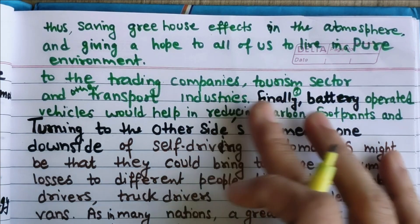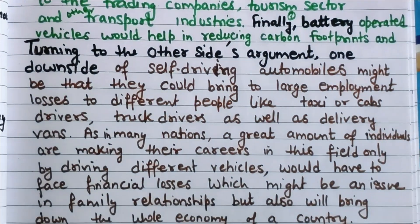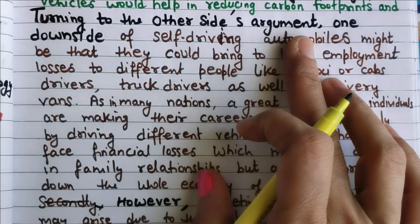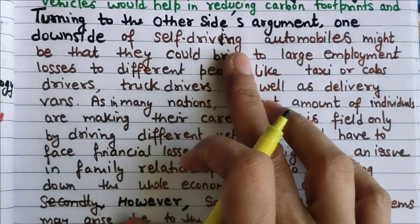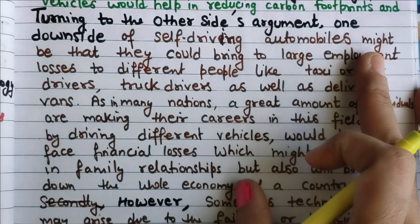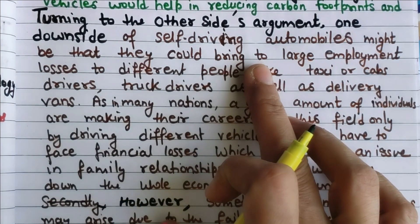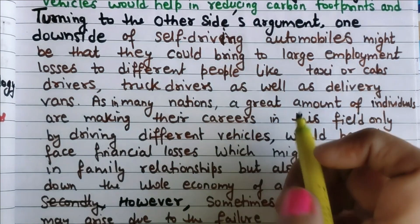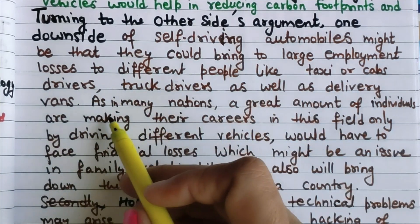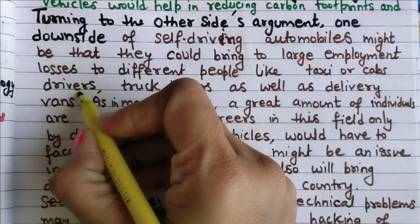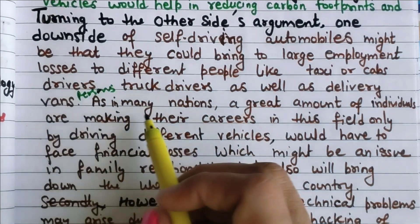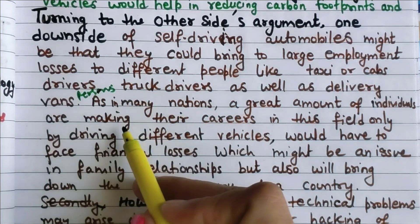Now the disadvantages paragraph. 'Turning to the other side's argument: one downside of self-driving automobiles might be that they could bring large employment losses to different people, like taxi or cab drivers, truck drivers, as well as delivery persons.'